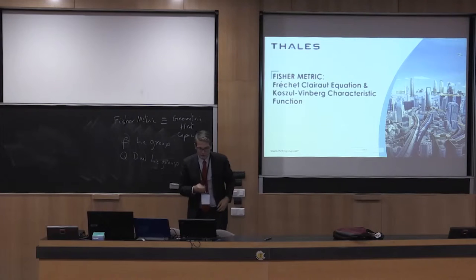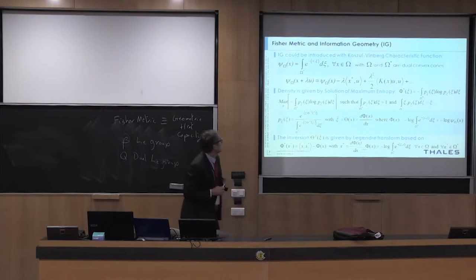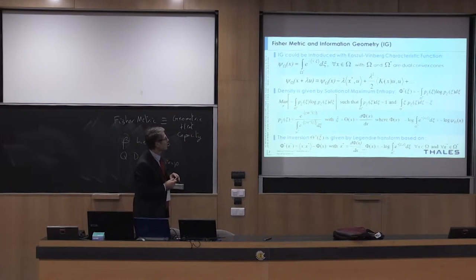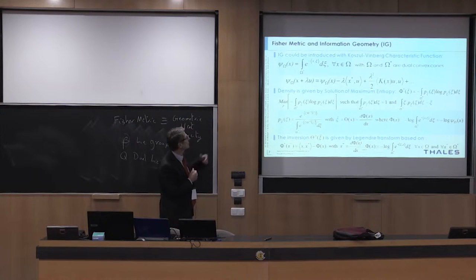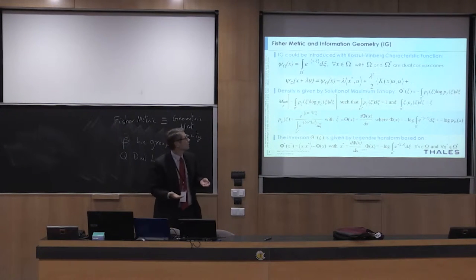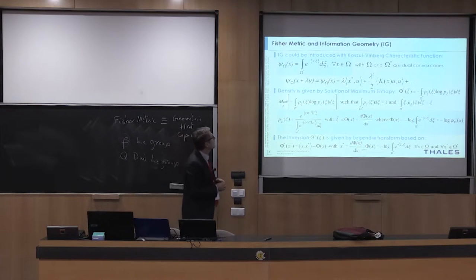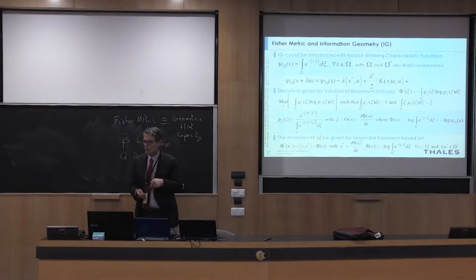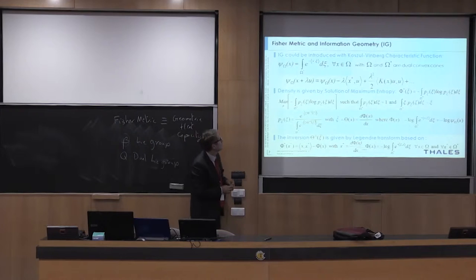About the Fisher metric — just to recall. We have different approaches to introduce the Fisher metric. You can introduce a general Gaussian-Dynkin characteristic function, extending the idea of Poincaré to introduce the characteristic function in probability. But the idea of Poincaré comes from the idea of François Mathieu in thermodynamics. When Poincaré read the book of Mathieu, he introduced the characteristic function in probability.